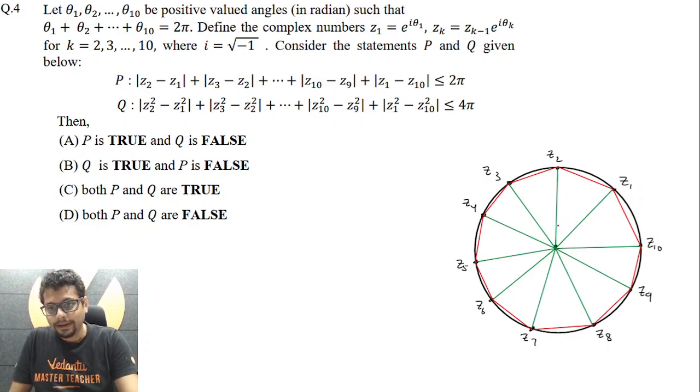Now having done this, try to understand that this angle essentially is theta 2. Why? Because Z2 will be Z1 times e to the power iota theta 2. So that means the mod remains the same, which is 1, but the argument increases by angle theta 2 and mind it, theta 1, theta 2, theta 3, up till theta 10, all are positive angles. So this is theta 2, this is theta 3, this is theta 4, theta 5, theta 6, theta 7, theta 8, theta 9, theta 10.